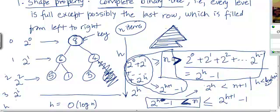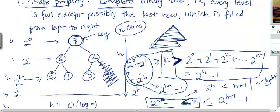What we did here was derive a lower bound for n and an upper bound for n. We derived the lower bound from the fact that all levels except for the last one must be completely full. That imposes a constraint: the number of elements must be more than the number of elements that can possibly occupy levels 0 to h minus 1. That's how we got the lower bound.